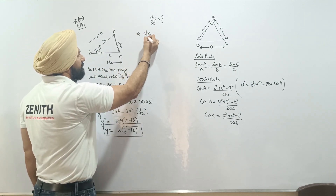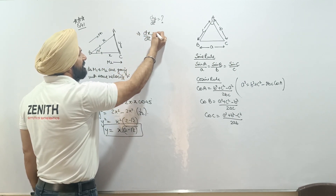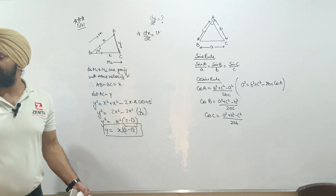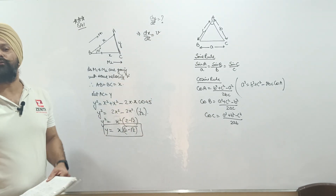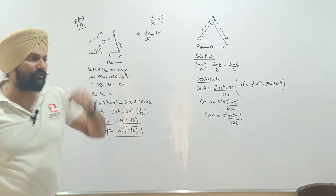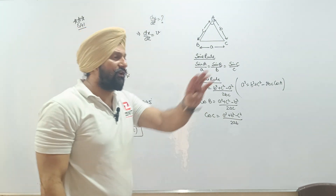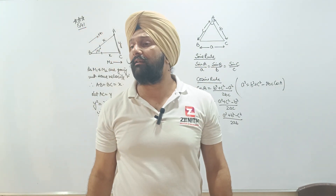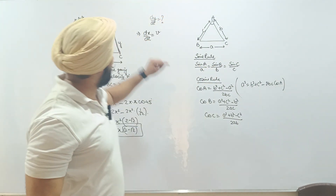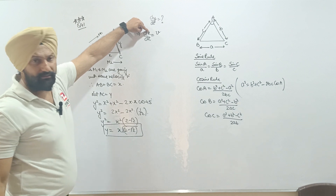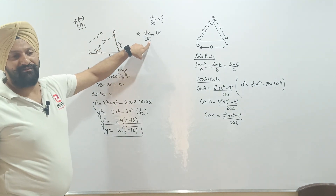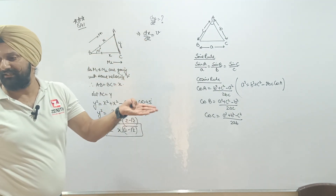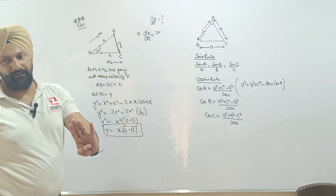The dx dt is basically nothing but velocity — the speed at which the change is going on. Velocity units are meters per second, x units are meters and time units are seconds. So velocity is nothing but dx dt.